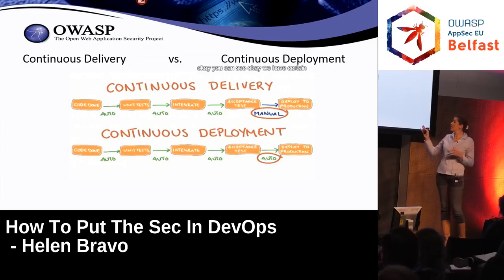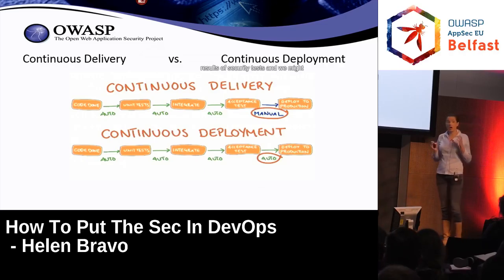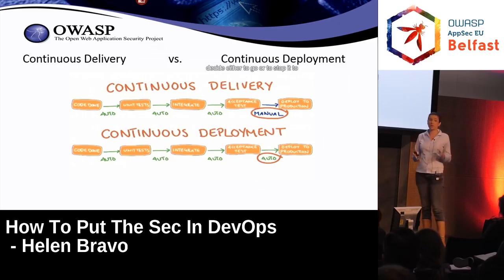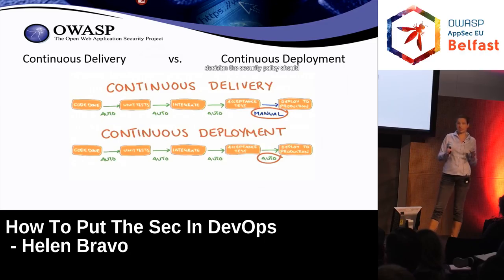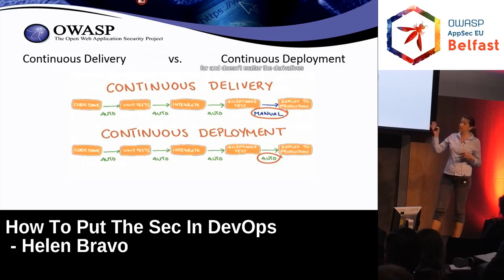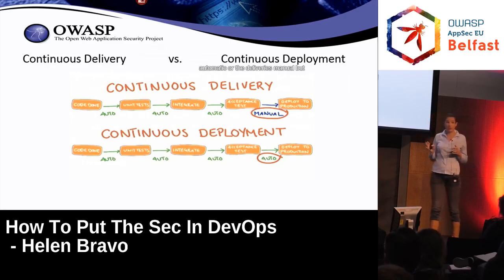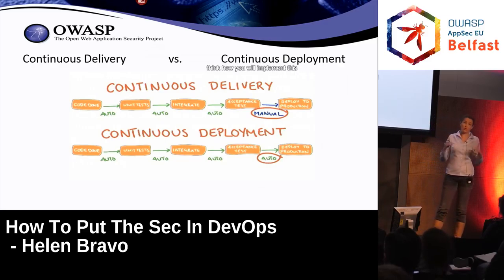This difference makes a huge difference for security. When it's automatic, you don't have a chance to stop it — it runs, and either you inherit in the process some checkers that fail the process, or on a manual stage you have a point to make this decision. You can see the results of security tests and decide either to go or to stop — the showstopper. The security policy should define what the showstoppers are, and you should ask yourself this question first before thinking about implementation.